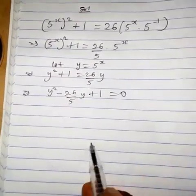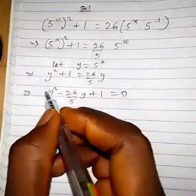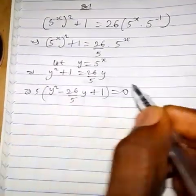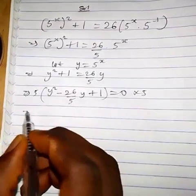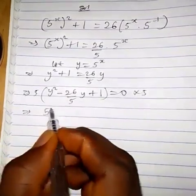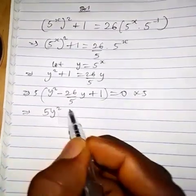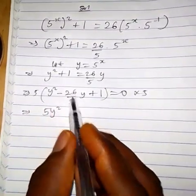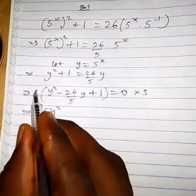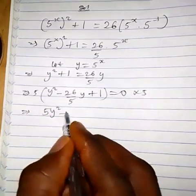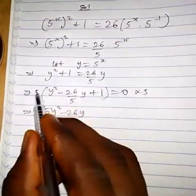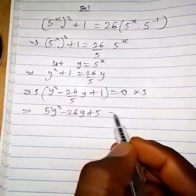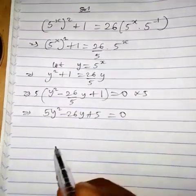Now suppose we multiply both sides by 5. So we have 5y squared — 5 times 26 over 5 gives us minus 26y, and 5 times 1 gives us plus 5 — which equals 0.